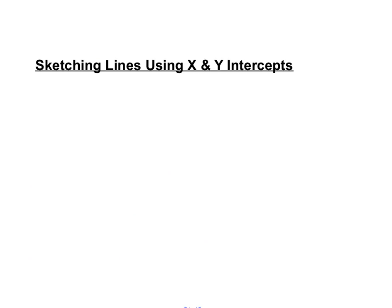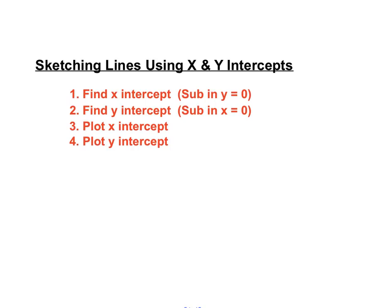Okay, so what we did there: we found the X intercept by subbing in y = 0 and solving the resulting equation. Subbed in X = 0 to find the Y intercept—might have to do a bit of rearranging to get the letter on its own, but still. Then we plotted the X intercept, we plotted the Y intercept, we joined the dots, and then we labeled the line.